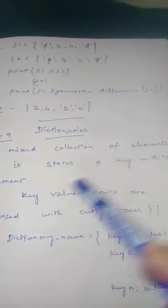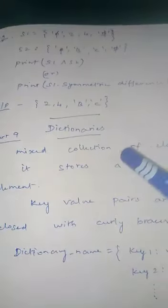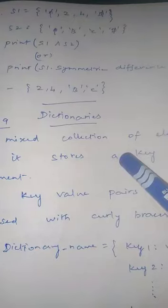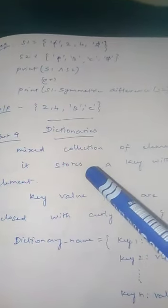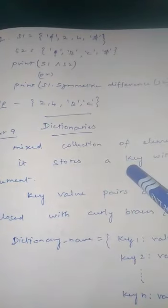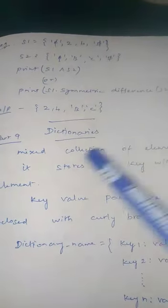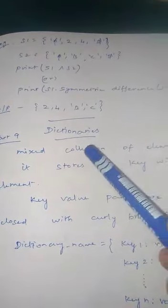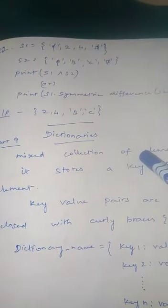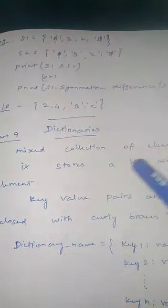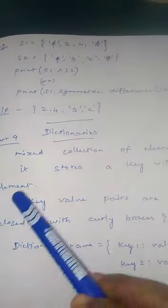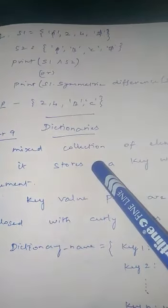What do you mean by dictionary? It is a mixed collection of elements. It stores a key along with its element. List, tuple, and set are more or less the same. Dictionary is also similar, but the difference is it stores a key along with the element. Dictionary is a mixed collection of elements — it can store any type of data, and it stores a key with each element.